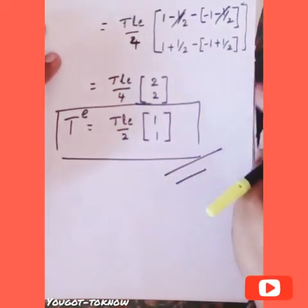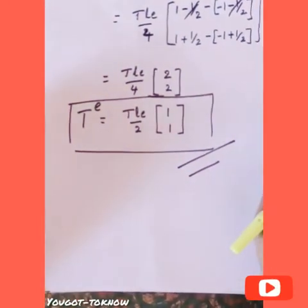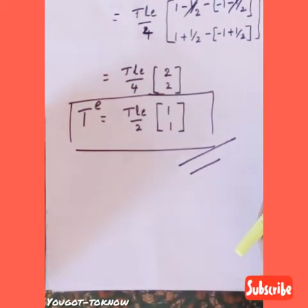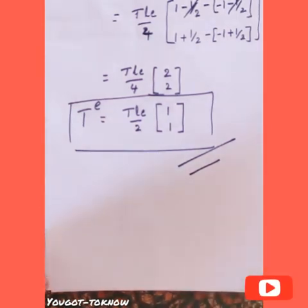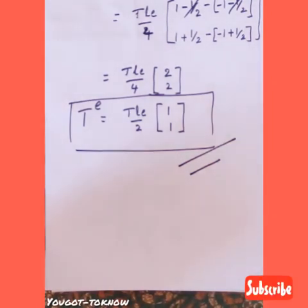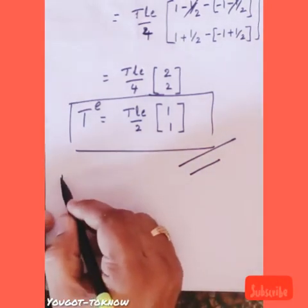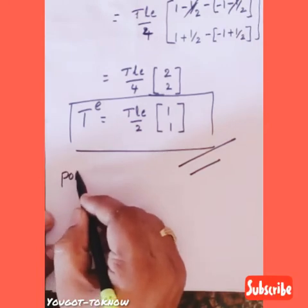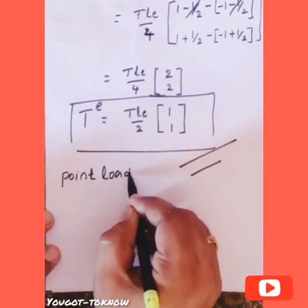This is called the load vector due to traction force for the bar element. Now, of the three terms in work potential, we have determined: the load vector due to body force, the load vector due to traction force, and the point load vector.